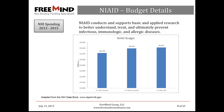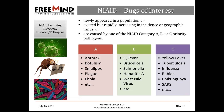The NIAID mission is to conduct and support basic and applied research to better understand, treat, and ultimately prevent infectious, immunologic, and allergic diseases. One important and growing area of interest is emerging infectious diseases or pathogens — defined as diseases newly appeared in a population, rapidly increasing in incidence or geographic range, or caused by one of NIAID's Category A, B, or C priority pathogens, including biodefense research.